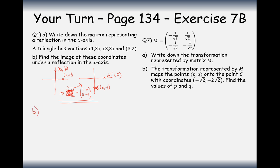For part B, find the image of the given coordinates under reflection in the x-axis. We can see that when we reflect in the x-axis, only the y-coordinate changes — it becomes negative. So for the coordinate (1, 3), the image would simply be (1, -3). I don't really need to do any matrix multiplication here because I can just spot what's going to happen: the y-coordinate changes sign.